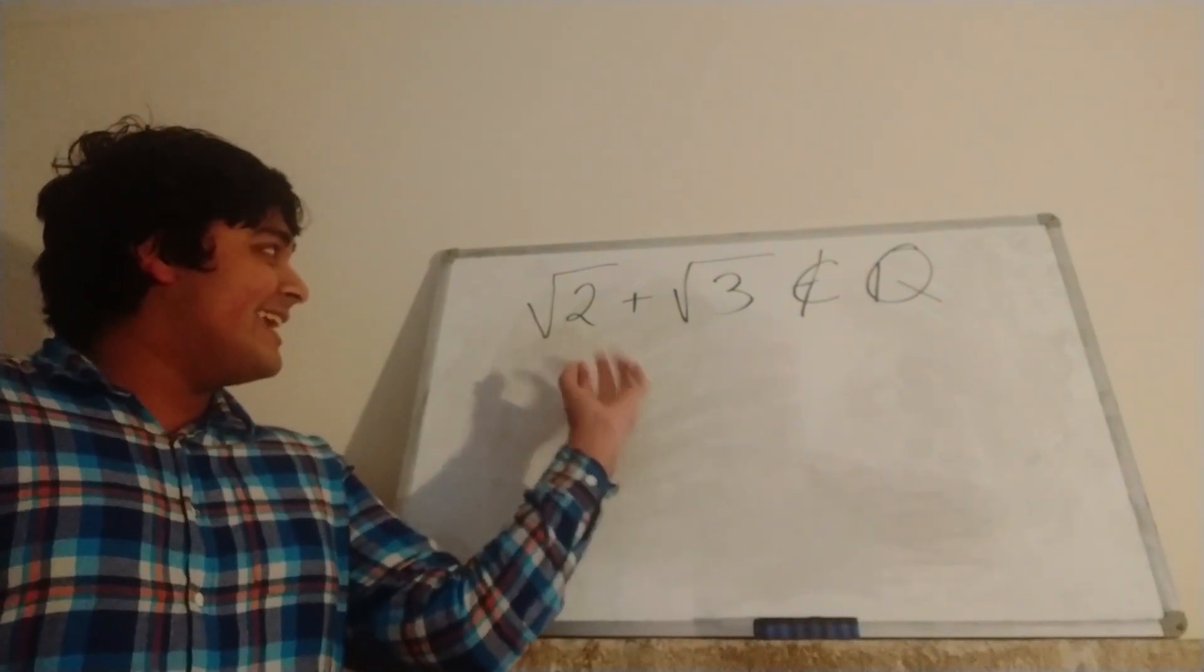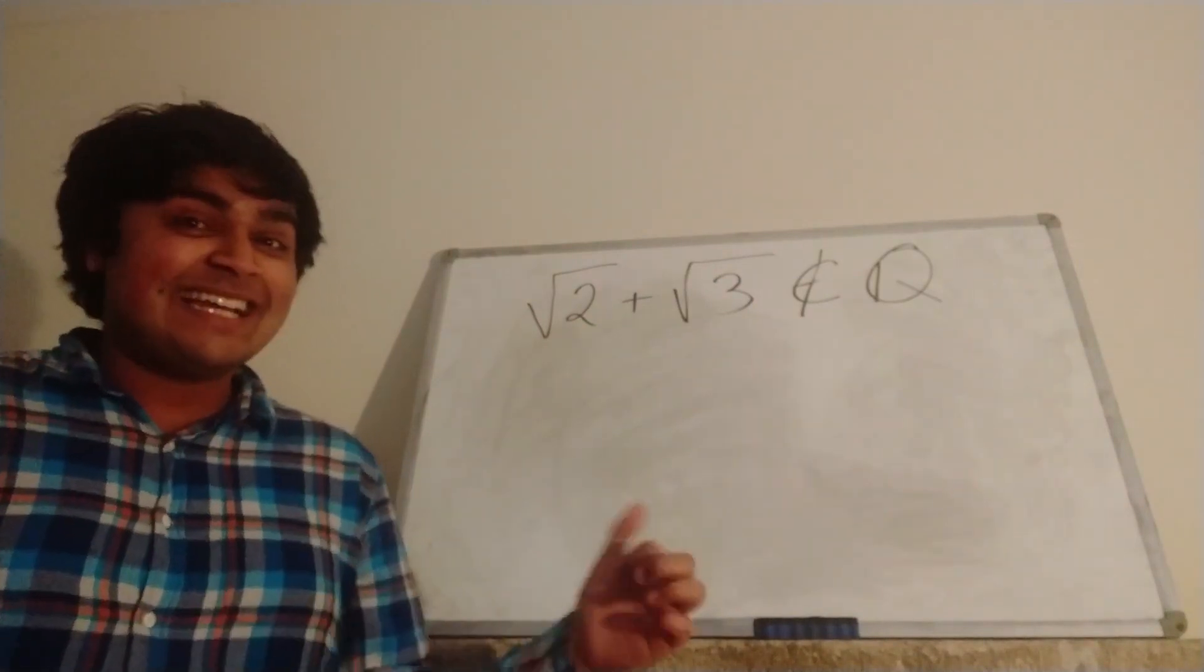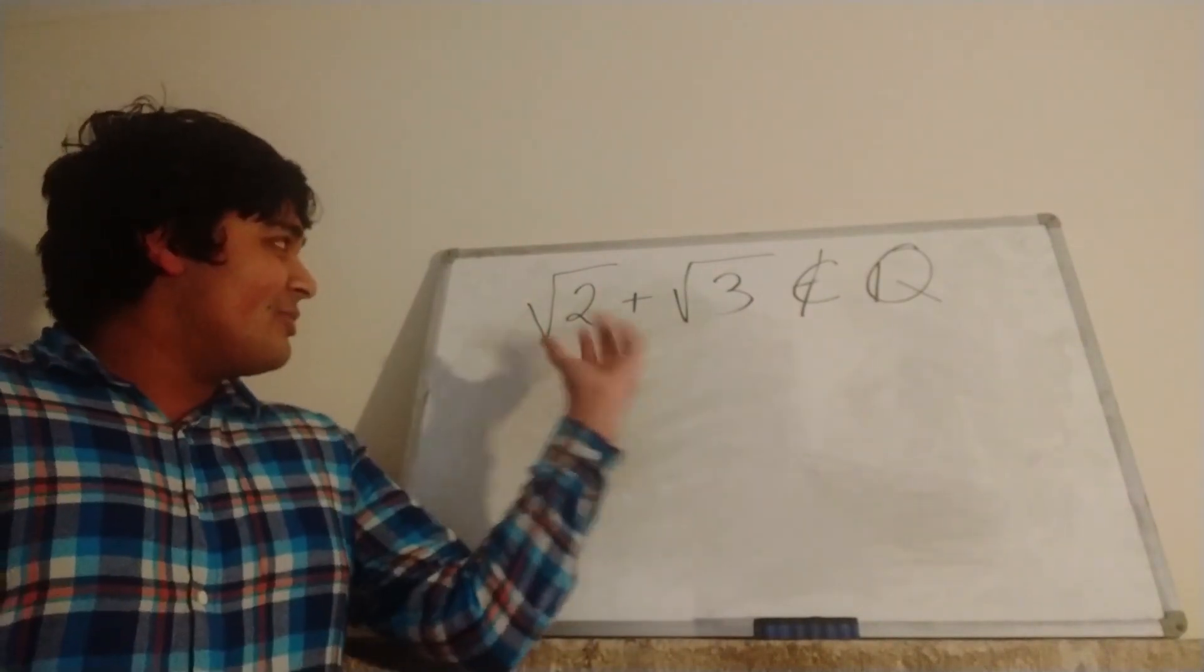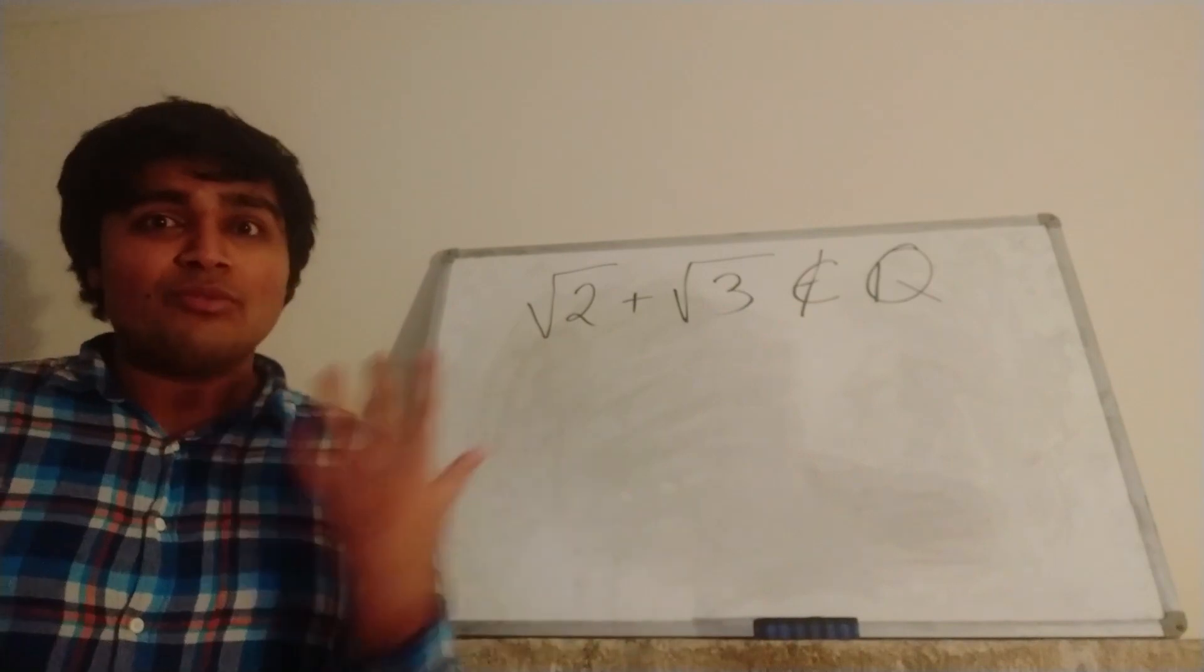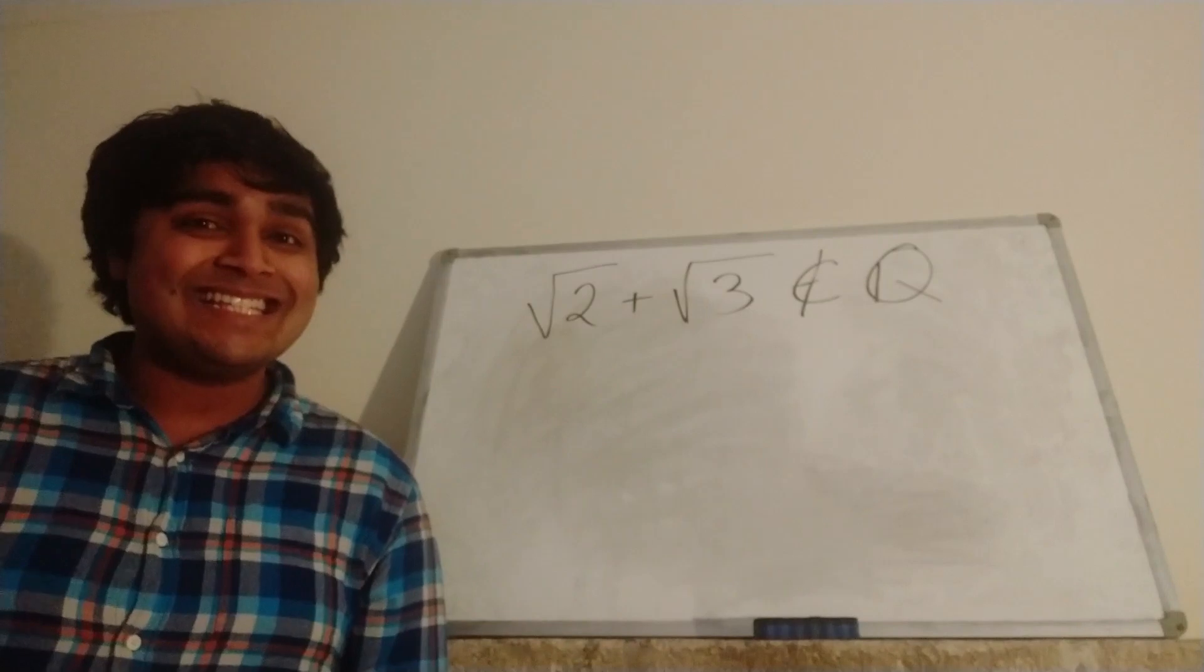Anyway, today I'm going to be looking at this thing here, √2 + √3, and I claim that it's irrational. And today I want to prove it. So we all know that √2 is irrational and we all know that √3 is irrational, but is √2 + √3 rational? I claim that it isn't.